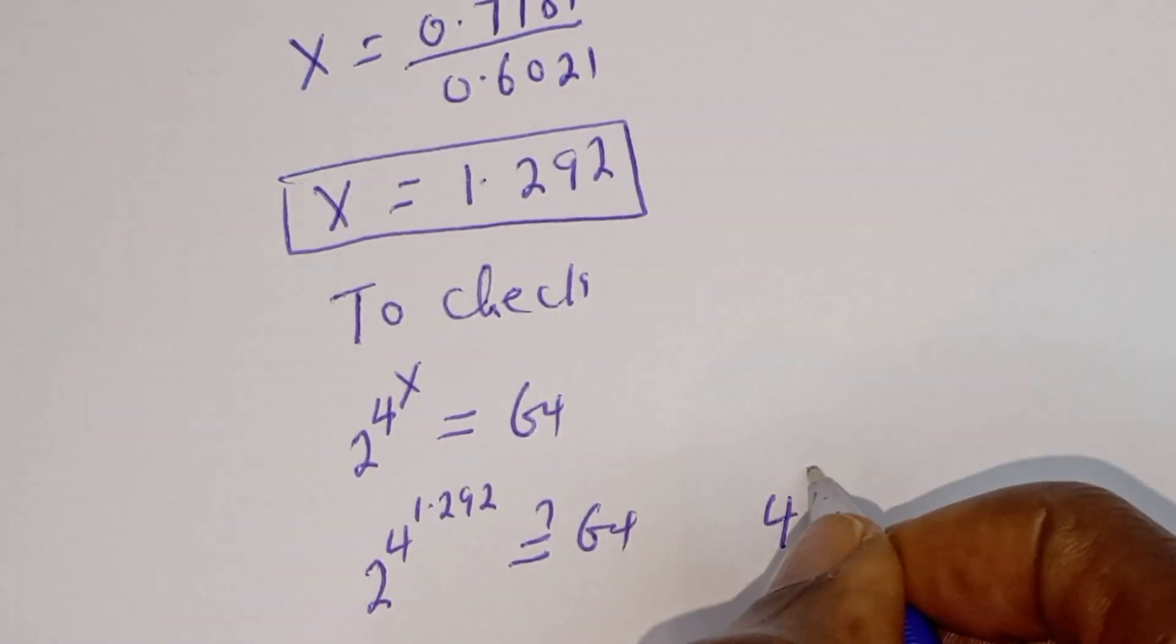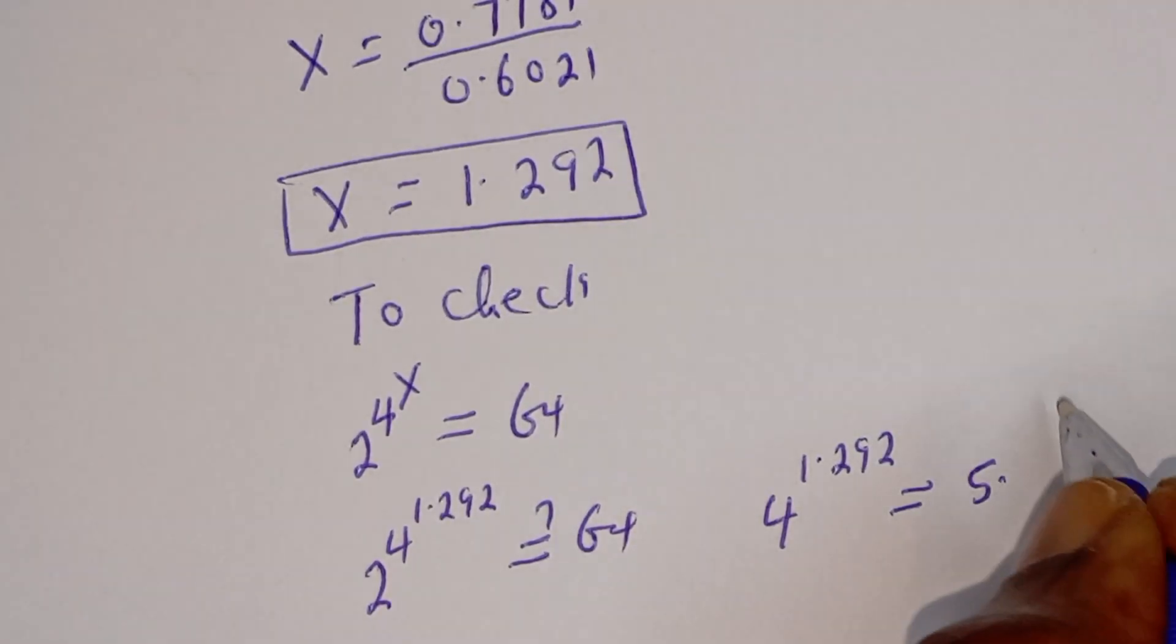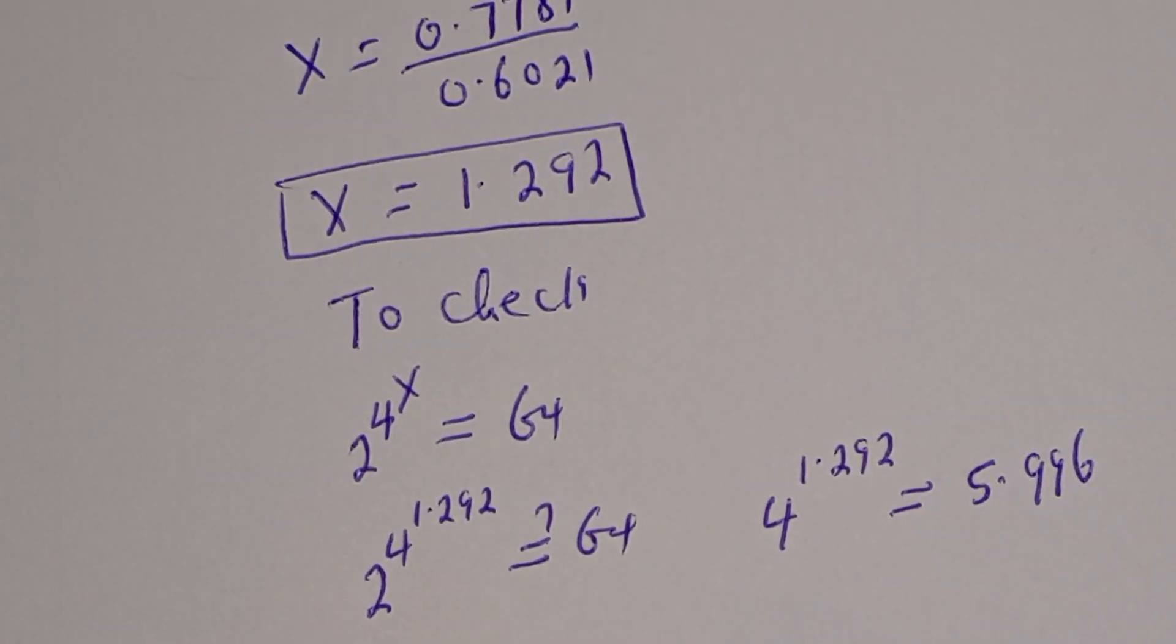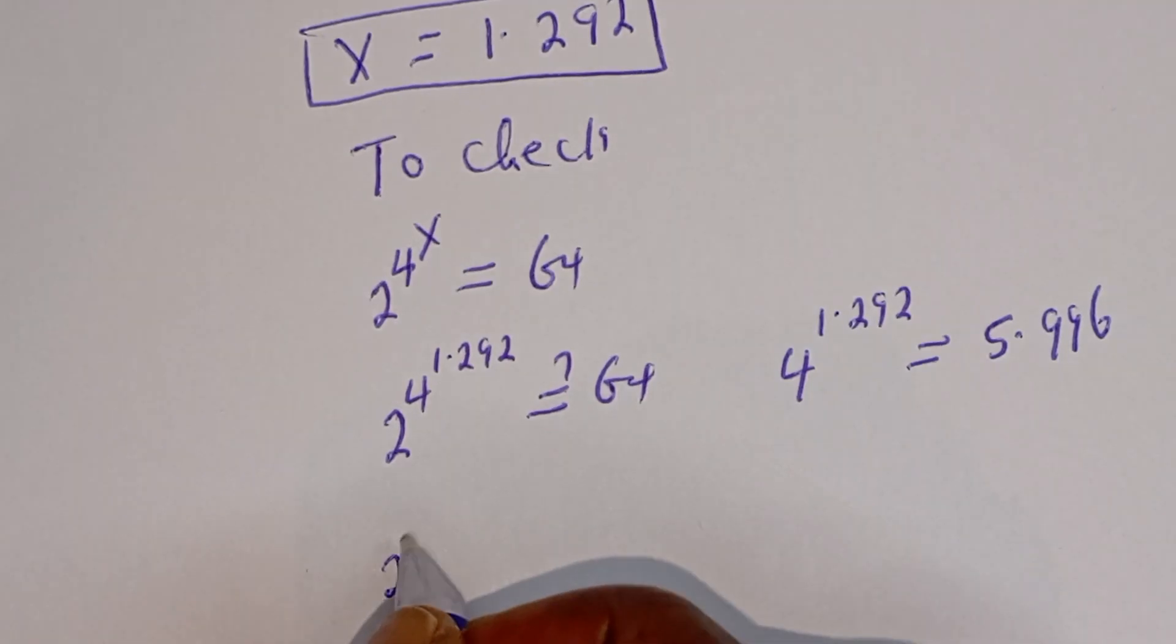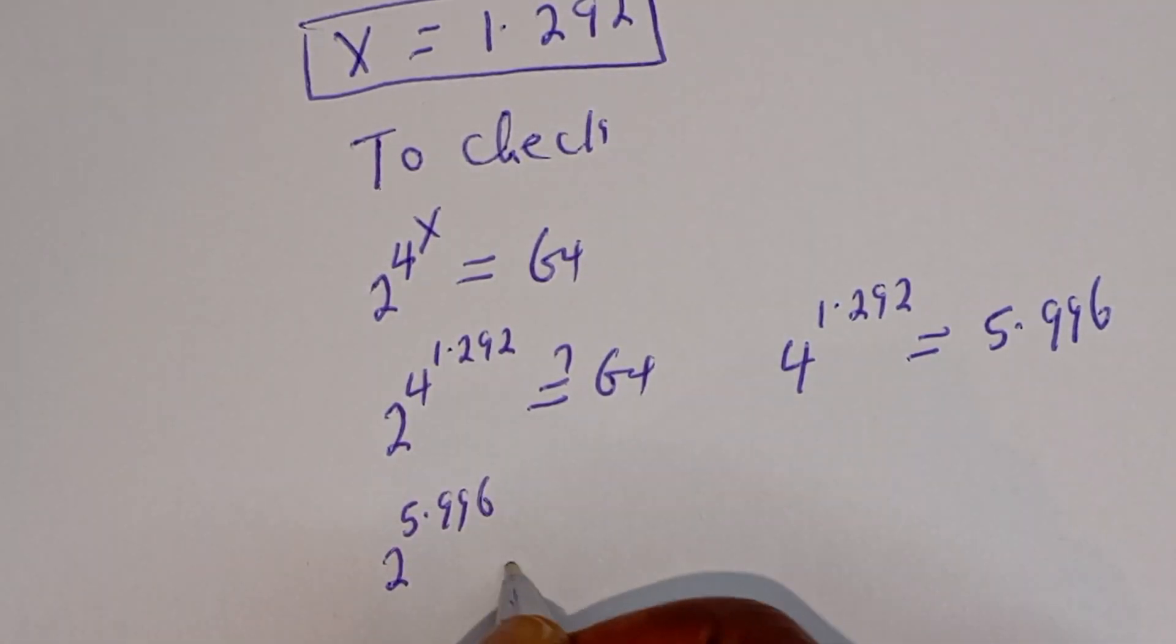Now, let's see, 4 to the power of 1.292. This is equal to 5.996. Then, from here, we have 2 to the power of 5.996 must be equal to 64.